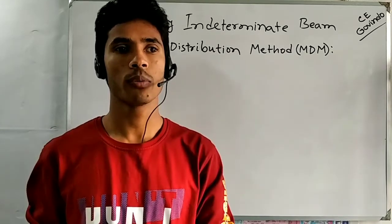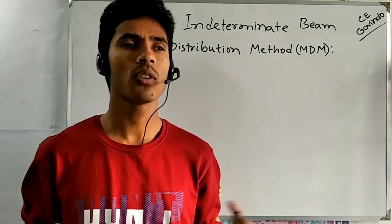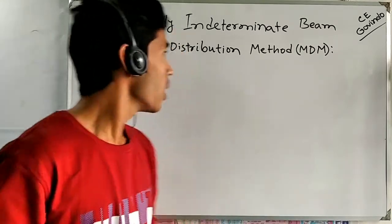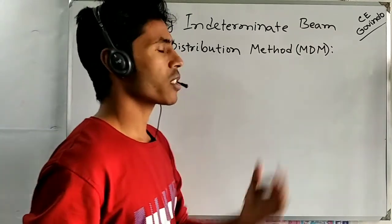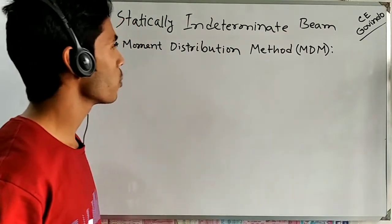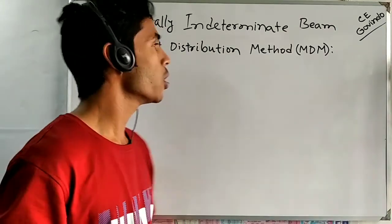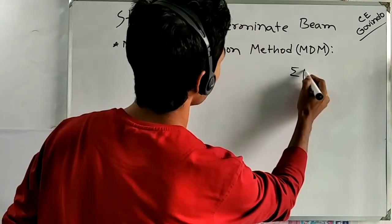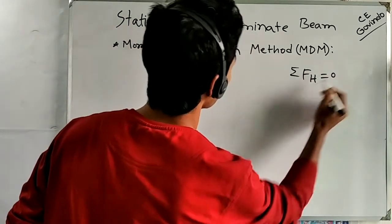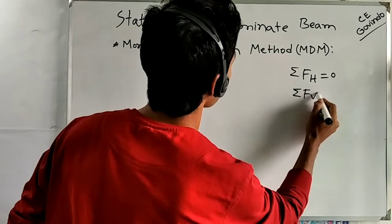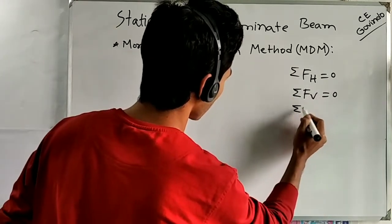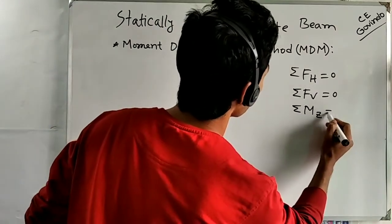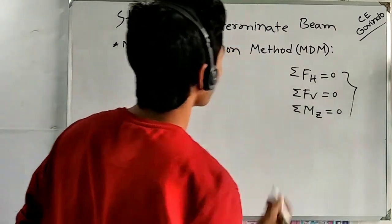Hello everyone and welcome. Today we're going to discuss how to analyze statically indeterminate structures or beams. Statically indeterminate structures are those which cannot be analyzed by static equilibrium. We have three static equilibrium equations: summation of forces in the horizontal direction equal to zero, summation of forces in the vertical direction equal to zero, and summation of moments about the Z axis equal to zero.